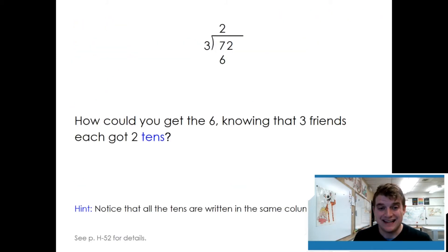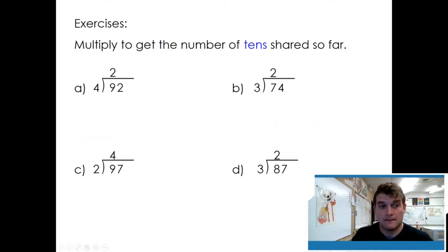How could we get the six knowing that three friends each got two tens? Two times three equals six. Two, four, six. Notice that all the tens are written in the same column. We need to be very careful about keeping our tens in the ten column. Multiply to get the number of tens shared so far. Two times four is eight. Try the next three.